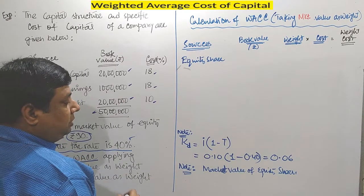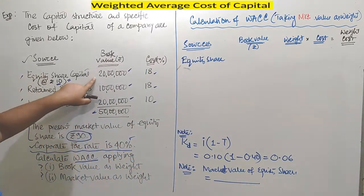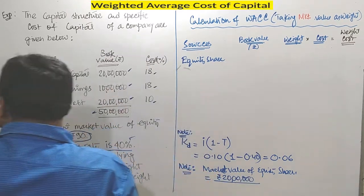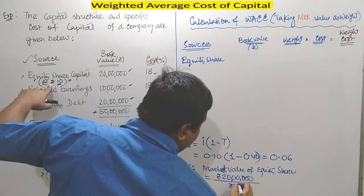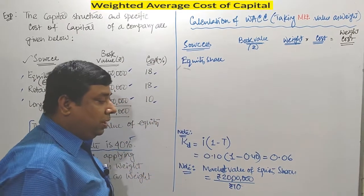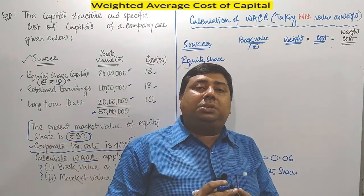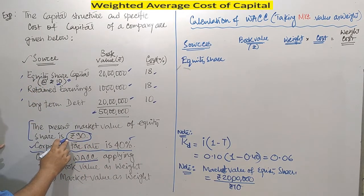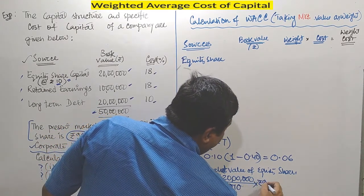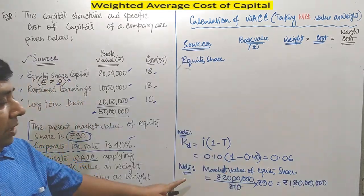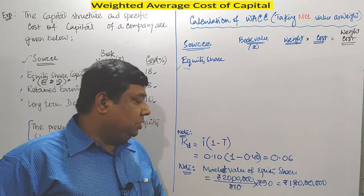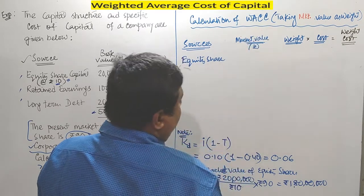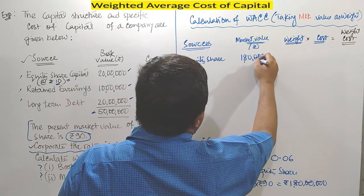The total equity capital at book value is Rs. 20 lakhs and the book value per share is Rs. 10. So 20 lakhs divided by 10 gives 2 lakh shares. But now the market price per share is Rs. 90, so we multiply 2 lakh shares by Rs. 90, giving us Rs. 1 crore 80 lakhs instead of Rs. 20 lakhs. That is the market value of equity capital.